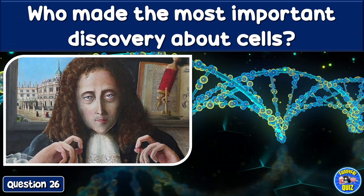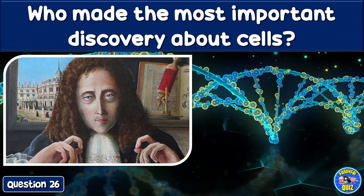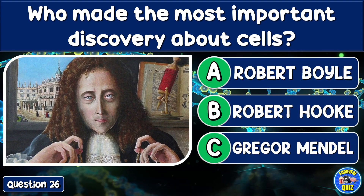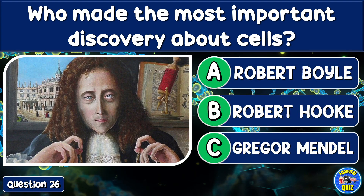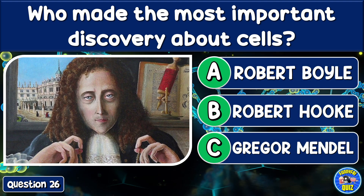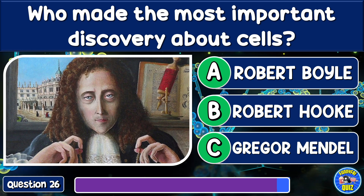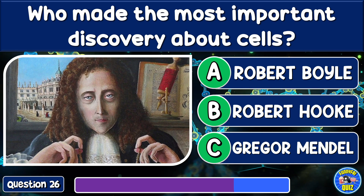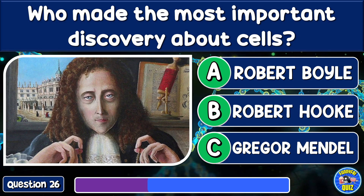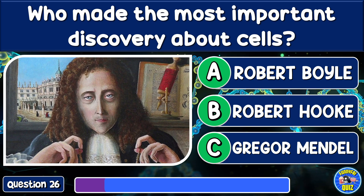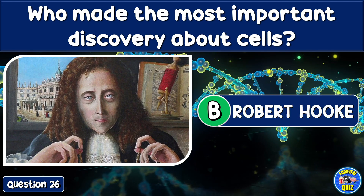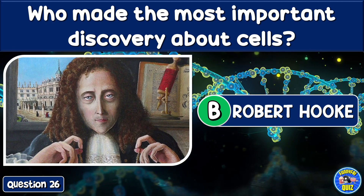Who made the most important discovery about cells? Robert Boyle, Robert Hooke, or Gregor Mendel? Robert Hooke.